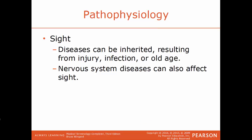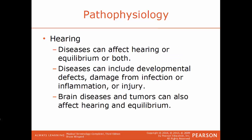Now I'll talk about some pathophysiology with these two senses. For sight, diseases can be either inherited or a result of an injury, an infection, or just due to aging. Diseases of the nervous system can also affect your sense of sight. For hearing, diseases can affect either hearing or your equilibrium or both. Diseases can include developmental defects, damage from an infection or inflammation, or from injuries. Brain diseases and brain tumors can also affect hearing and equilibrium.